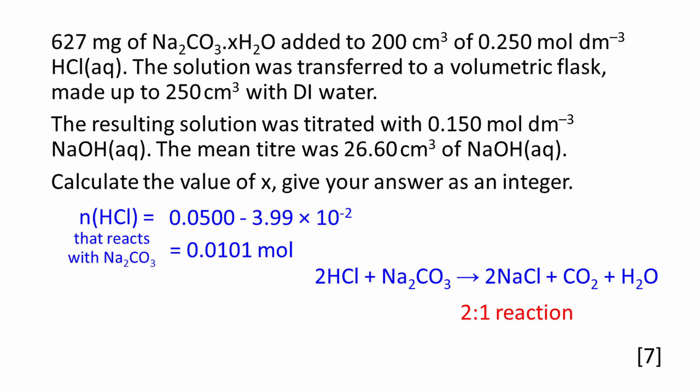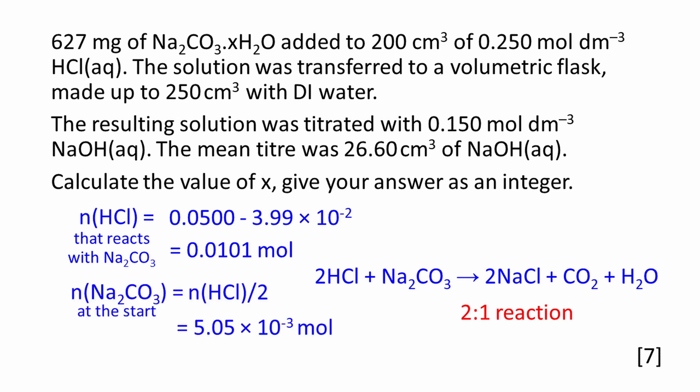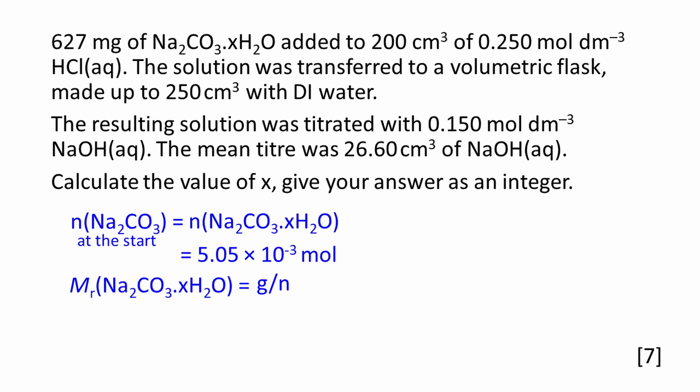Looking at the balanced equation, hydrochloric acid reacts with sodium carbonate in a 2-to-1 ratio. The amount of sodium carbonate present at the beginning of the analysis is equal to the amount of hydrochloric acid divided by 2, which works out to be 5.05 × 10⁻³ moles. The amount of hydrated sodium carbonate present at the beginning of the reaction is also 5.05 × 10⁻³ moles.